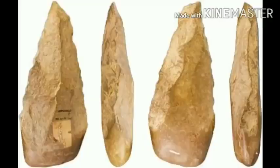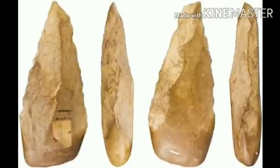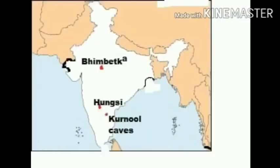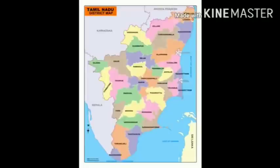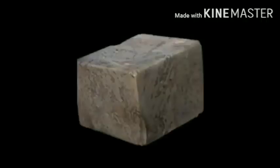The Acheulean hand axe was first recognized at a place called Saint-Acheul in France, hence they are called Acheulean tools. In India, the Acheulean tools have been found near Chennai and many more sites such as Isampur in Karnataka and Bhimbetka in Madhya Pradesh. The core is a main block of stone from which small chips are flaked by using a hammer stone.